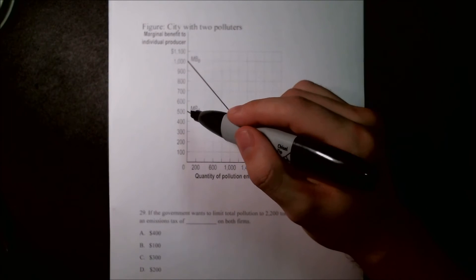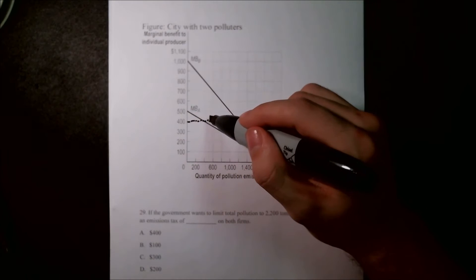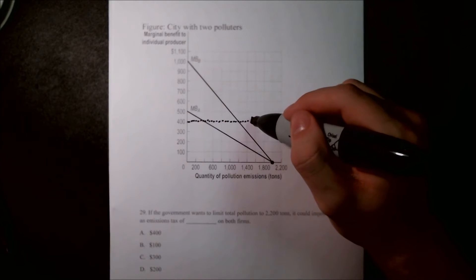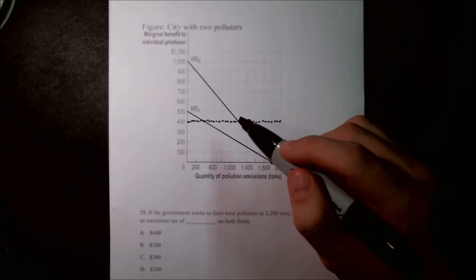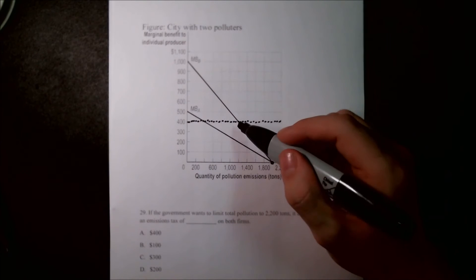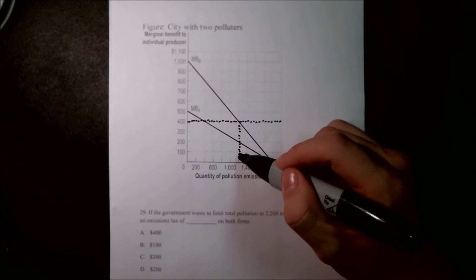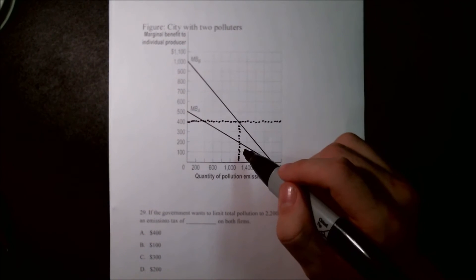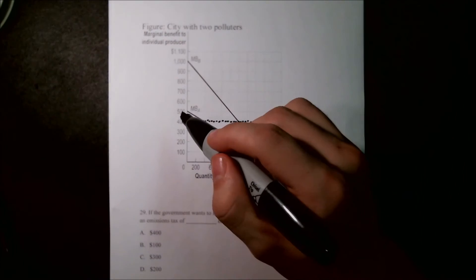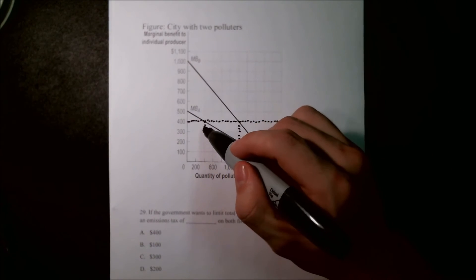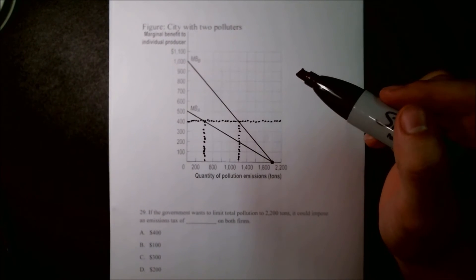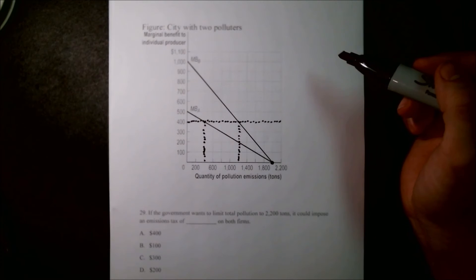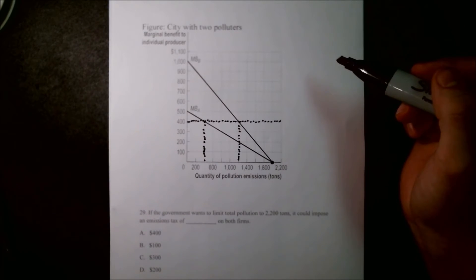$400. So if we impose a tax of $400, raising that baseline up $400, we're going to get firm B producing 1,200 tons of pollution and firm A producing 400. So that's going to add up to a total of 1,600 tons, which means that our answer is going to be slightly lower than a tax of $400.